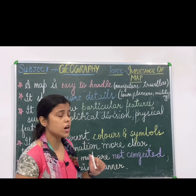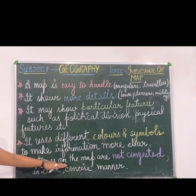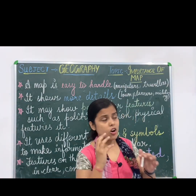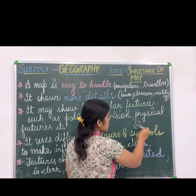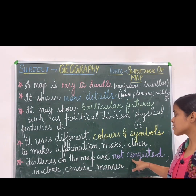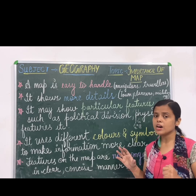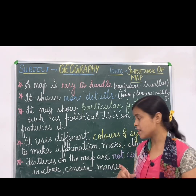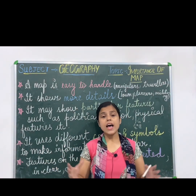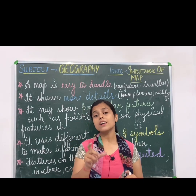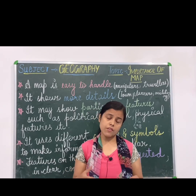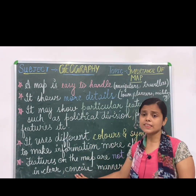Our last point says that features on the map are not congested. Congested means things are not written in a very close, crowded manner. Map is very clear — things are written in a precise, clear, and concise manner. Concise — C-O-N-C-I-S-E — means when you try to say many things with the help of few words, conveying your message concisely. In the same way, a map indicates all the things in a concise manner.